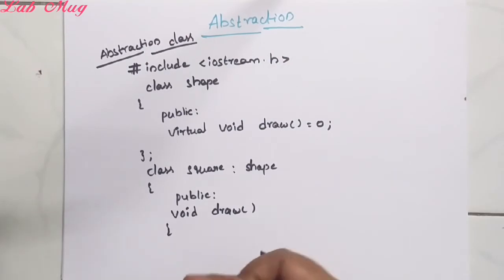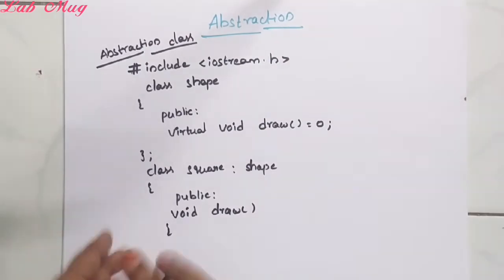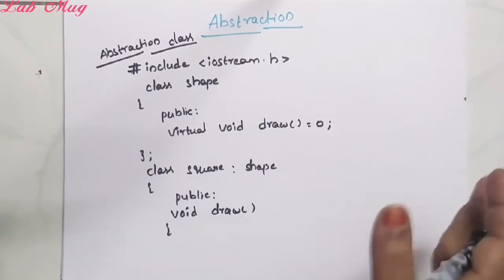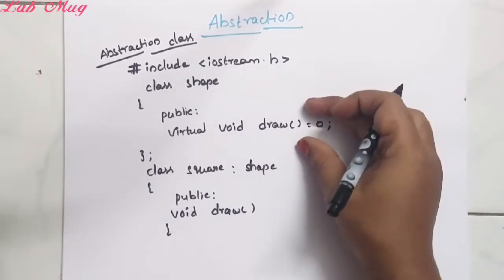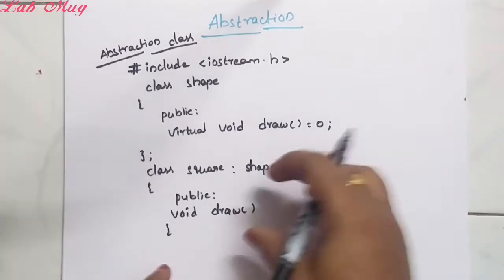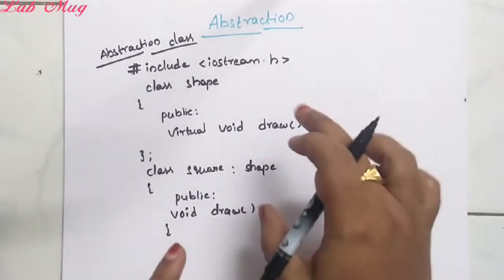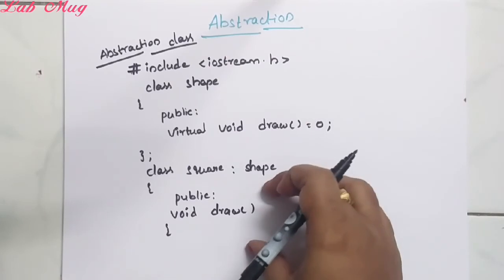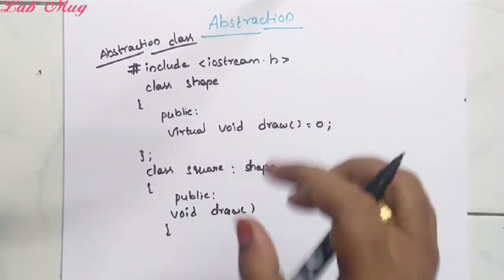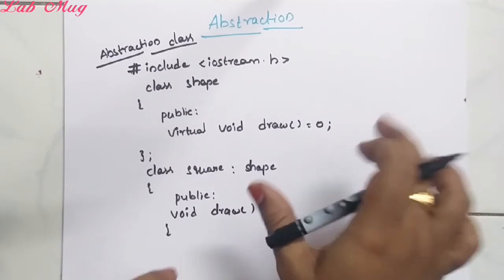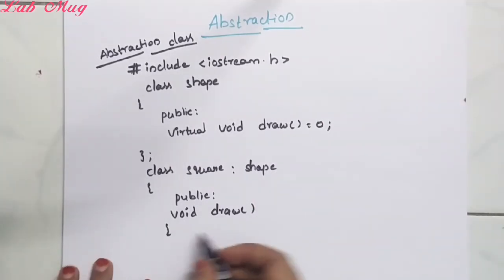That is function overriding. Function overriding - that is nothing but base class function definition with different content, and derived class lo kuda same structure to function definition undali with different content. That is nothing but base class and derived class lo same method name undadam - that is method overriding.